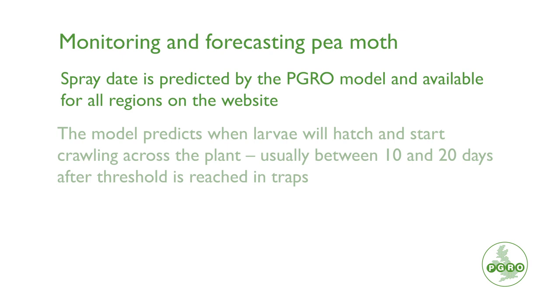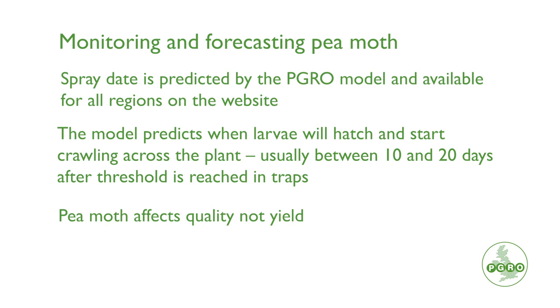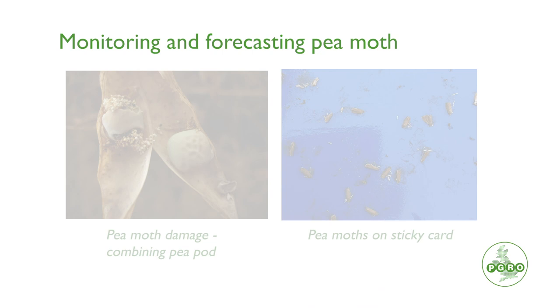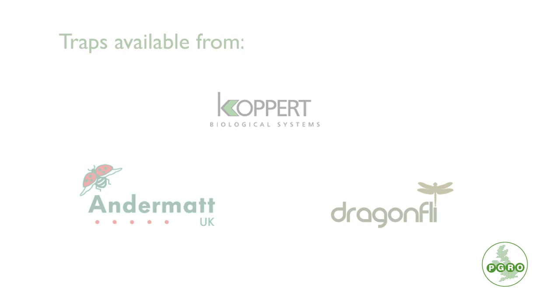They're moving towards the pods where they'll bore through the pod wall and feed on the seed below. So it's a pest that affects quality and not yield. You can also see how critical it is to know exactly when this part of the life cycle — where the larvae are crawling across the pods — is going to happen, because that's what you're targeting. There's a really good system in place that involves the use of traps. They're either castellation traps, which are bucket-shaped traps, or we can also use delta traps, which are pyramid traps with a sticky card in the base. These are available from several suppliers now, so put orders in now so that you've got plenty of time to get these in place for the beginning of May.